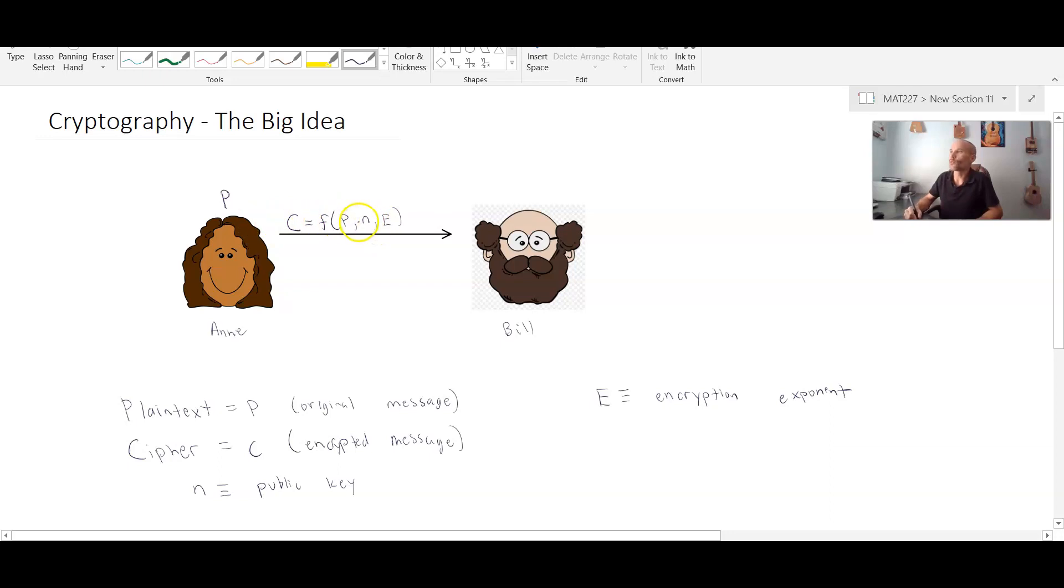And once Bill receives the message, Bill is going to receive the value of c. Now that's not going to do Bill much good because Bill doesn't know what that means. It's a jumbled up series of numbers that do not reflect the original message that Ann had sent.